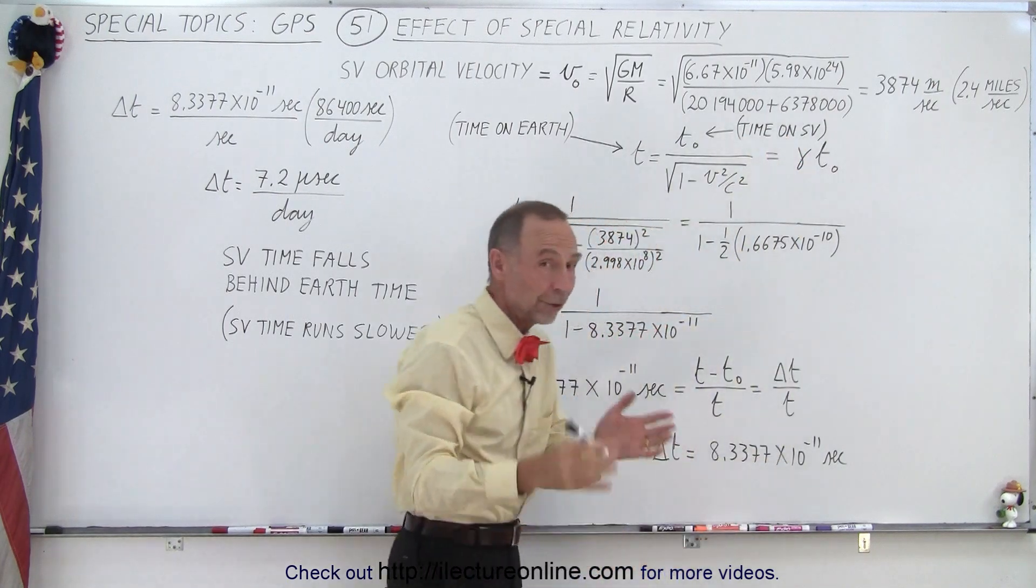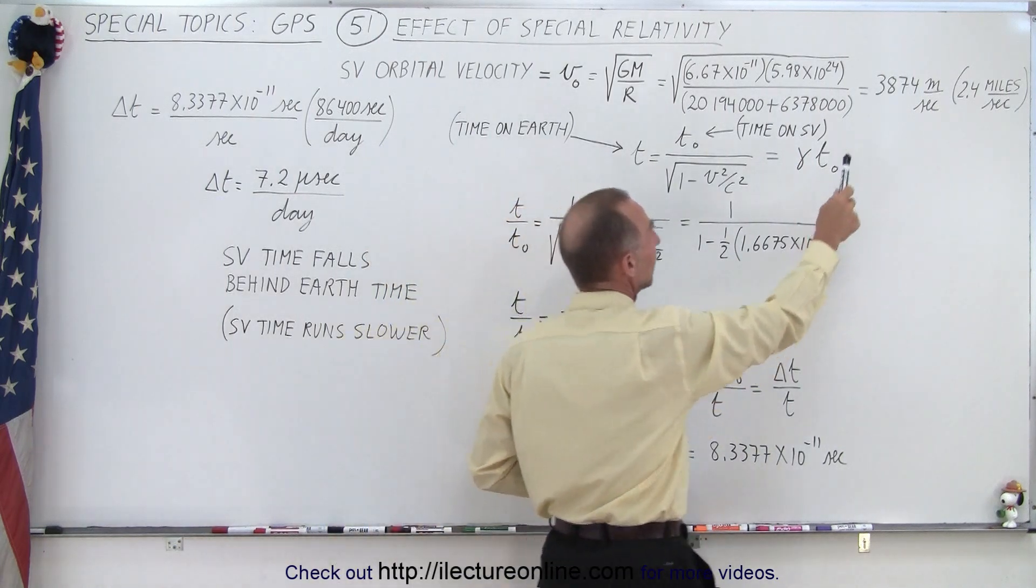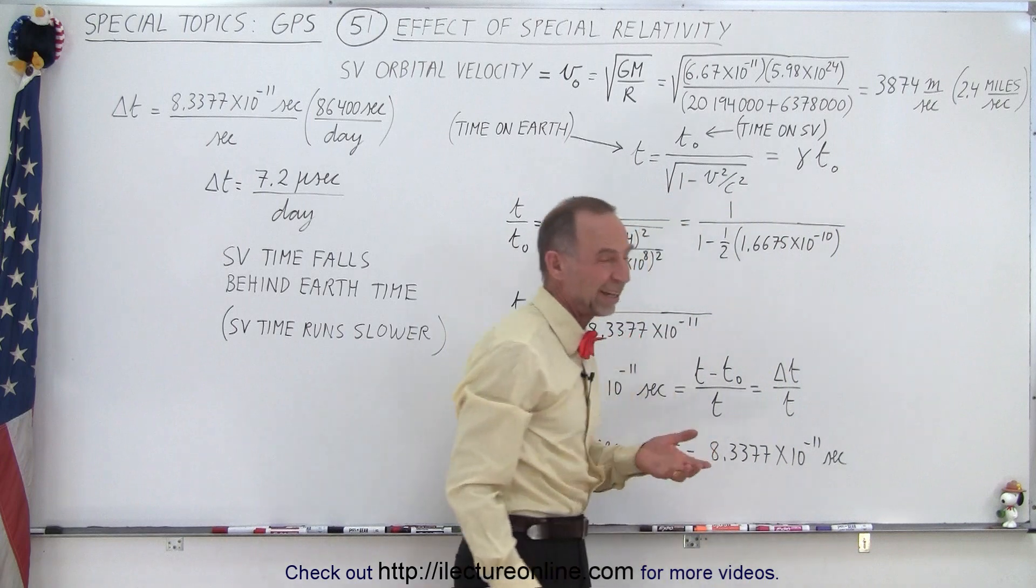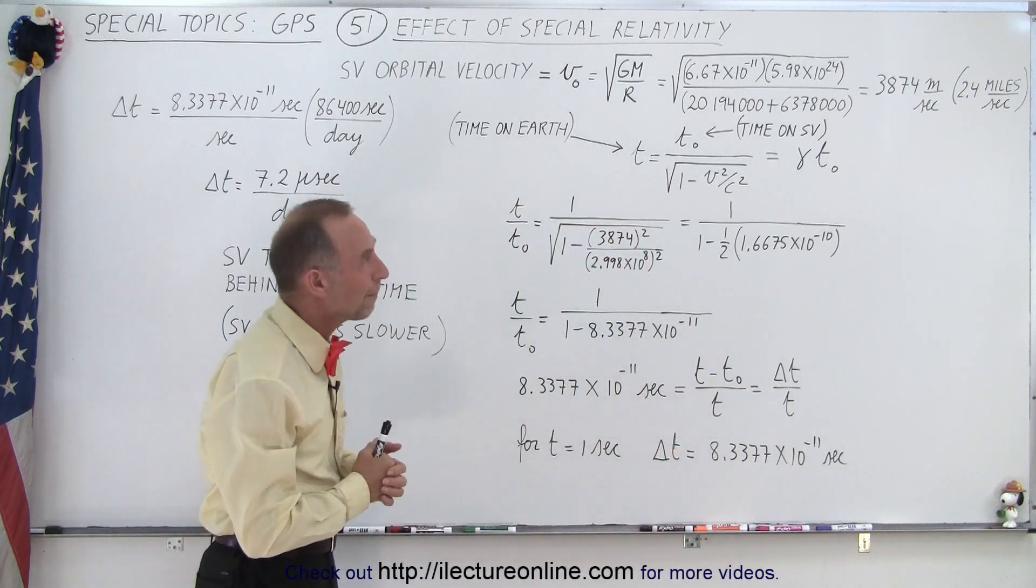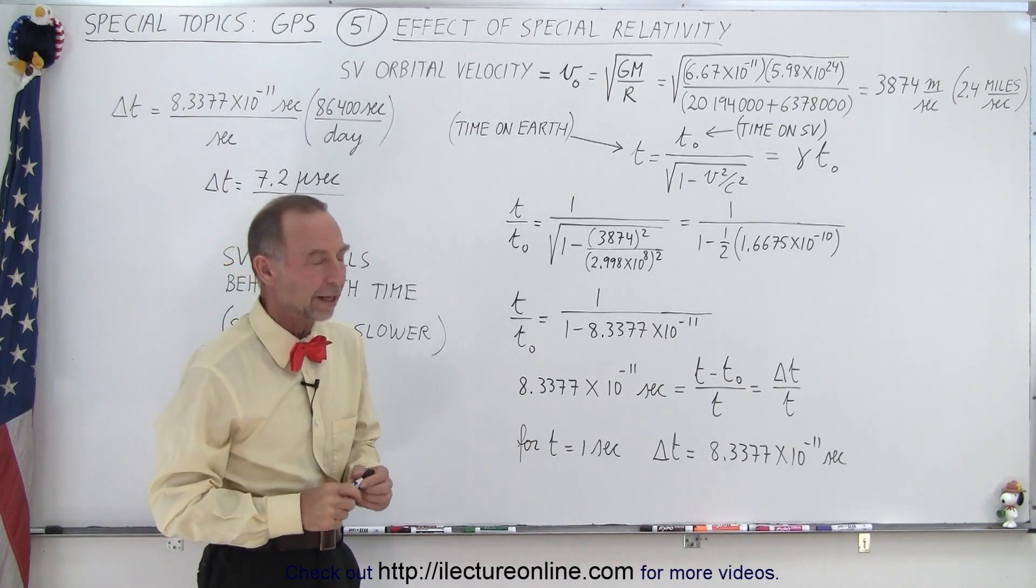We have to add the radius of the Earth to that for the total radius to the center of mass of the Earth, and we get 3,874 meters per second, about 2.4 miles per second, or about 3.9 kilometers per second. That is the speed of these satellites.